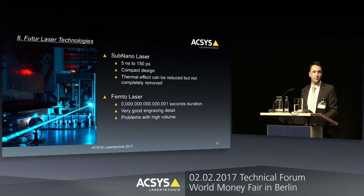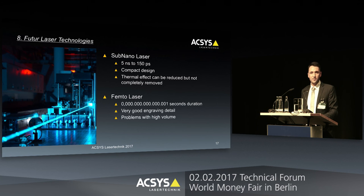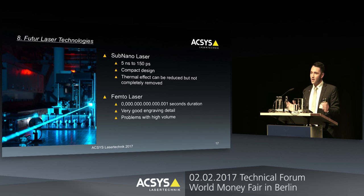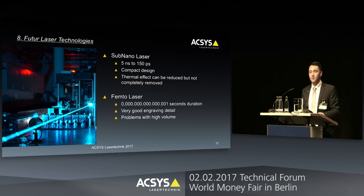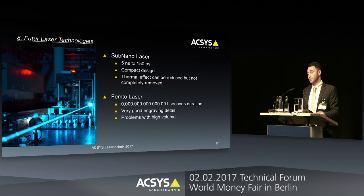Let's speak about possible future laser technologies that are already available on the market. We have the sub-nanosecond laser, which works in a range from low nanosecond to high picosecond. It comes in a very compact and small design, is air-cooled, and can reduce the heat affected zone in the material, but can never completely remove it. We also have the femtosecond laser, which has an even shorter pulse duration than the picosecond. We experienced incredibly good details, but found that for deep or very large engravings, some surface errors begin to appear. For now, we will see what this looks like in a couple of years.